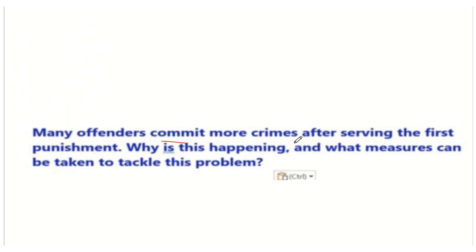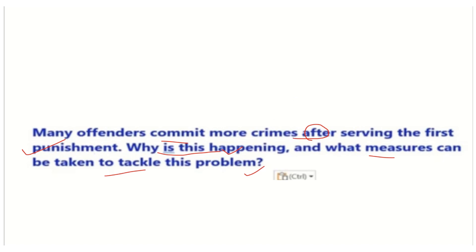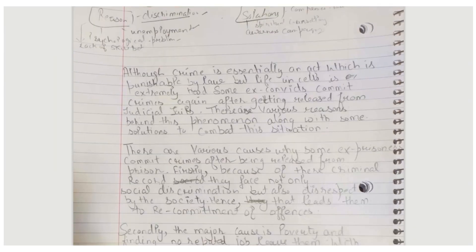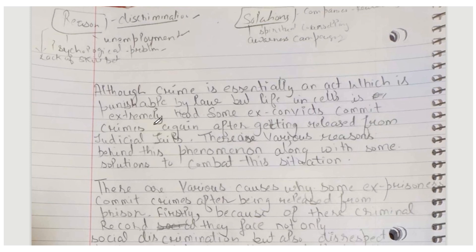The essay topic is: many offenders commit more crimes after serving their first punishment — why is this happening and what can be done to tackle this problem? When this problem comes up, you can use the word 'predicament' for the problem, and for solutions you can use 'eradicate' or 'mitigate'. Let's see — although crime is essentially an act which is punishable by law...